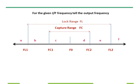Remember: if the frequency is between FC1 and FC2, it will capture. Once captured, you can move up to FL1 and FL2. Let's start another example. Input is FF — output will be F0. Input is FE — output will be F0 because it is not between FC1 and FC2. Now input is FD — output is FD. Input is FC — output is FC. Input is FB — output is FB. Up to the lock range, it will maintain. If I go to FA, which is beyond the lock range, output goes back to F0, also called the center frequency.